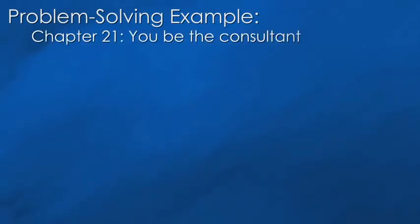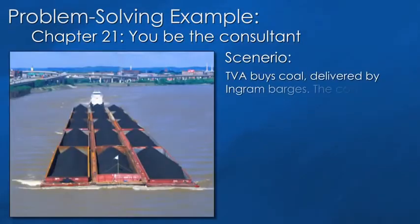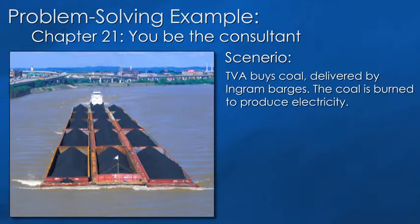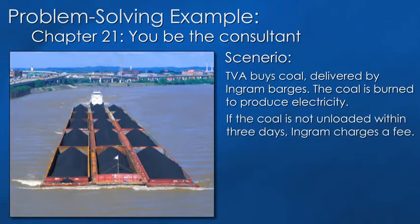This was a problem faced by the Tennessee Valley Authority — they're the power company in the South. They buy coal and burn it to make electricity, and sell the electricity to local power companies. This was a problem faced by one of their coal-burning power plants along the Cumberland River. The coal arrived in barges and would sit at the docks for up to two weeks without anybody unloading it. The barge company gave them three days to unload the coal, but if it took longer they would charge them for every day the coal was not unloaded.